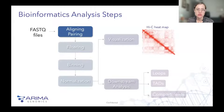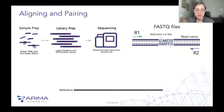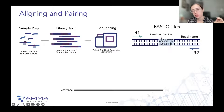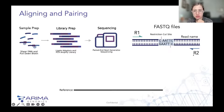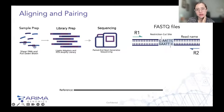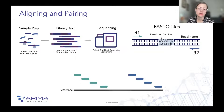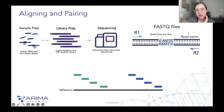The first step of every pipeline is aligning and pairing. After sample prep, library prep, and sequencing, you have FASTQ files with a forward read and a reverse read. Hi-C is a paired-end read technology, so these two reads will be paired using a unique read name. You get them separately, so you need to align the forward read first, then the reverse read, and then use that unique read name identifier to pair them together.